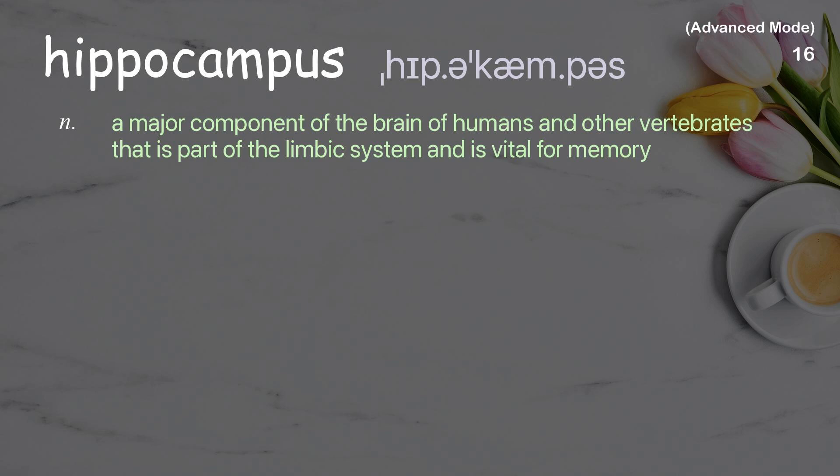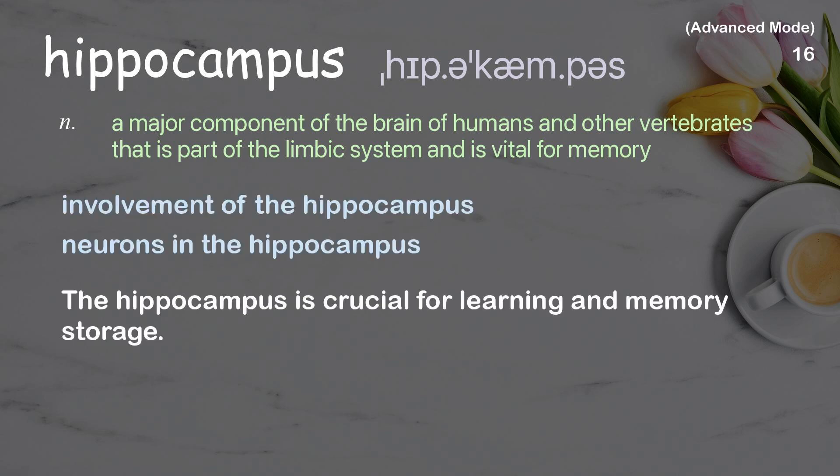Hippocampus: A major component of the brain of humans and other vertebrates that is part of the limbic system and is vital for memory. Examples: Involvement of the hippocampus, Neurons in the hippocampus. The hippocampus is crucial for learning and memory storage.